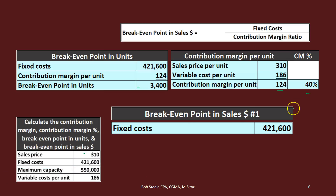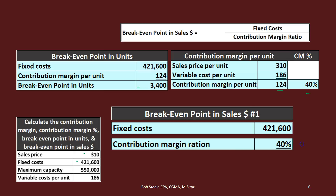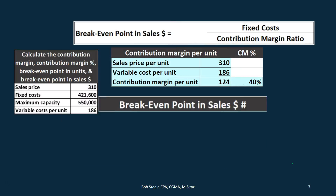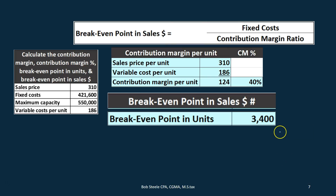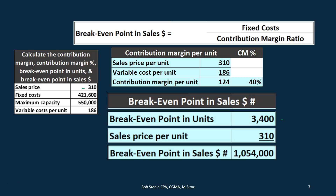Plugging in the numbers: fixed costs of $421,600 divided by the contribution margin ratio of 40% (or 0.4) gives us $1,054,000. That's the break-even point in dollars. The alternative method: take the break-even point in units — 3,400 units — and multiply by the sales price of $310, and we get that same $1,054,000. Either method works, but in multiple choice problems the available information may limit you to only one of these approaches.